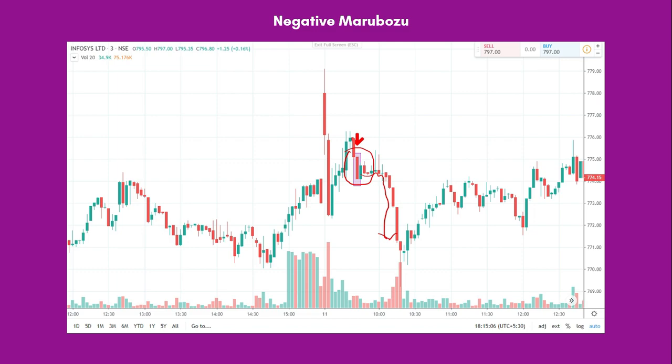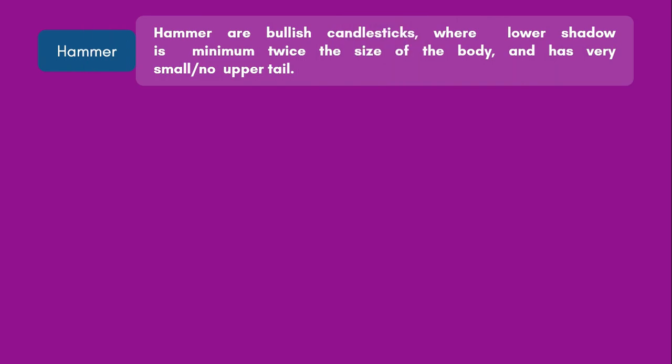The next pattern is Hammer. Hammers are bullish candlesticks where the lower shadow or lower tail is a minimum of twice the size of the body, and it has a very small or no upper tail. To simplify, a hammer looks exactly like an actual hammer. It has a small body and a big lower tail. The lower tail should be at least twice the size of the body — if the body size is x, the tail size should be at least 2x — only then we call this a hammer.